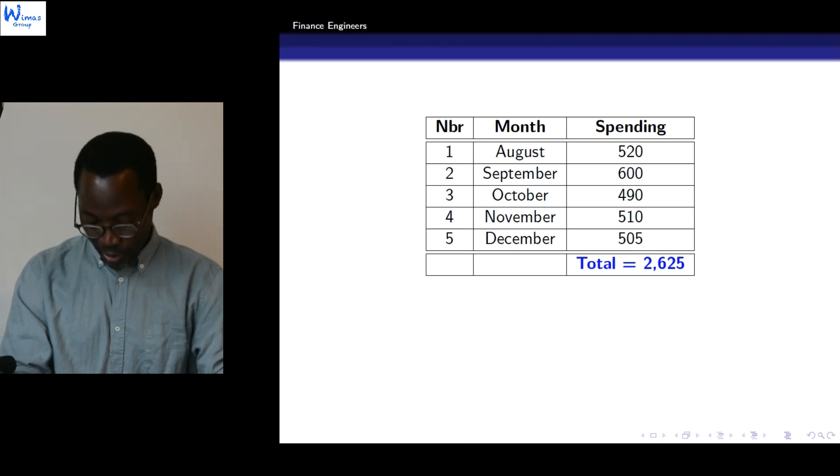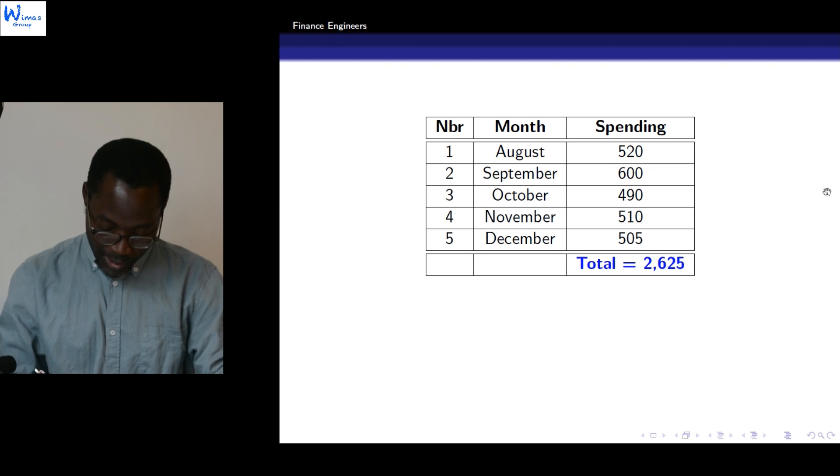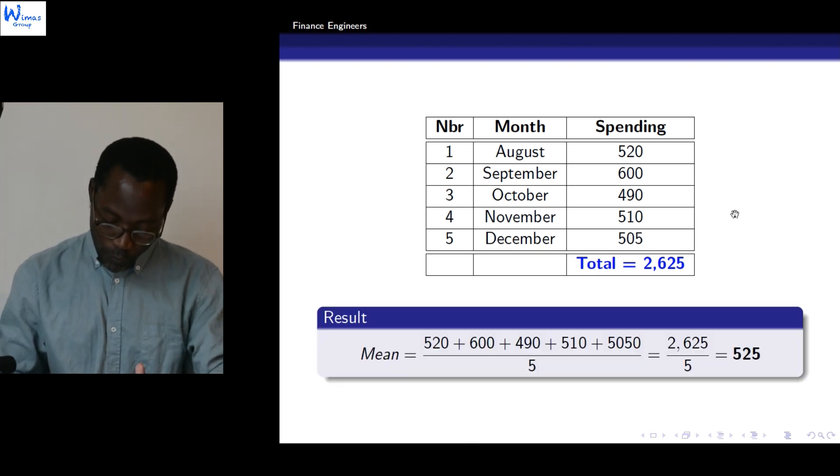He wants to know the mean of what he has spent during those five months. He wrote that in August he spent 520, in September 600, in October 490, in November 510, and in December 505.